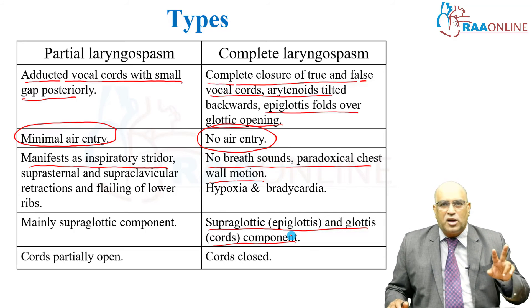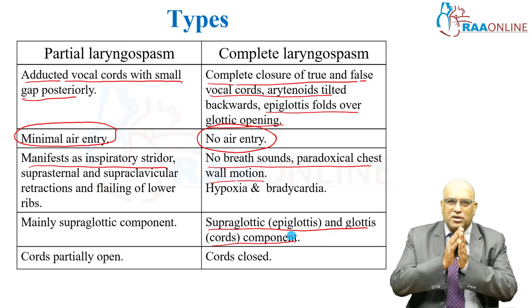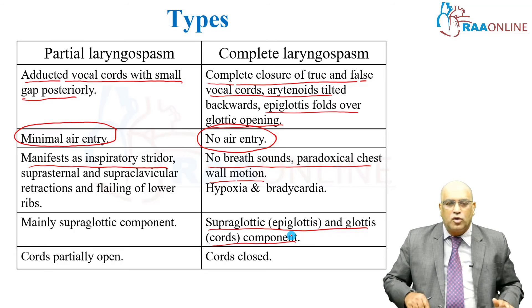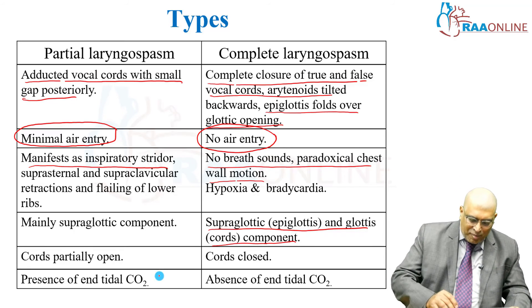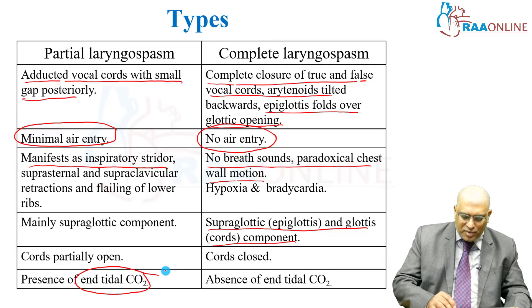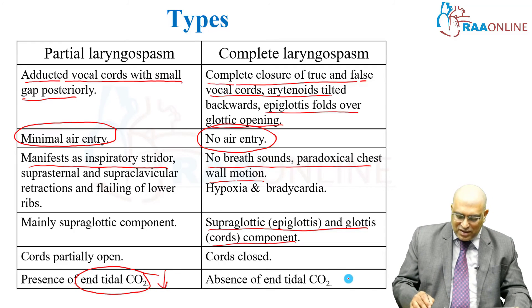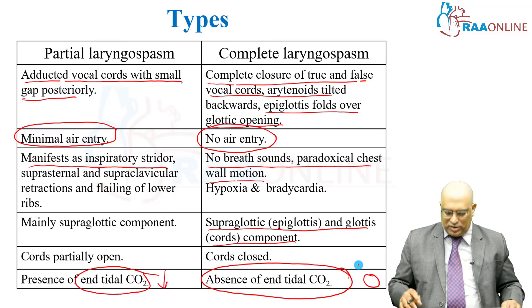In partial laryngospasm the cords are partially open, whereas in complete laryngospasm the cords are totally closed. In partial, there may be a little end-tidal carbon dioxide which might be decreased, while in complete, end-tidal carbon dioxide is not present at all.